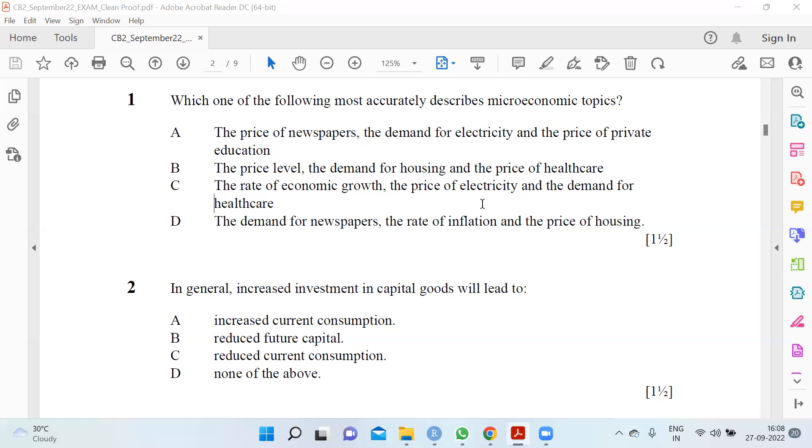Which one of the following most accurately describes microeconomic topics? This is a very easy question. The options include price of newspapers, demand for electricity, price of private education, price level, rate of economic growth, and demand for health care. Obviously the rate of inflation, rate of economic growth, and price level do not come into microeconomic topics, so it's A.